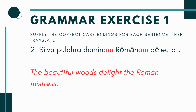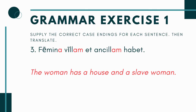On number two, we have Silva pulcra, domin blank, Romanam blank, delectat. We already have a subject: Silva pulcra. The A ending is the nominative singular ending, meaning it's a singular subject, and I have a singular verb, delectat, so it all matches. My subject is the beautiful woods and my verb is delectat — delight. So the beautiful woods delight what? That's why it's going to be Dominam Romanam — the woods delight the Roman mistress. Just follow the endings and you'll be able to piece it together. There's only going to be one right answer.